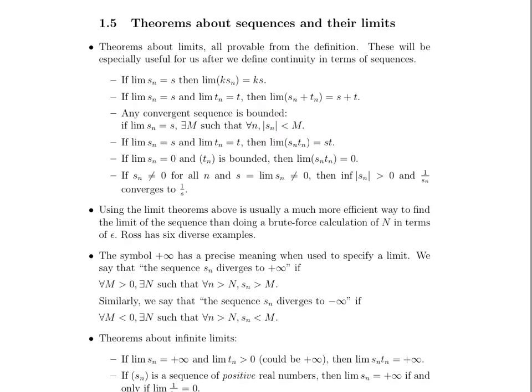If the limit of a sequence is s and the limit of another sequence is t, then the limit of the sequence created by taking the product of the terms — the first term is the first term of this sequence times the first term of that sequence, the second term is the product of the second terms — is equal to the product of their limits, s times t.